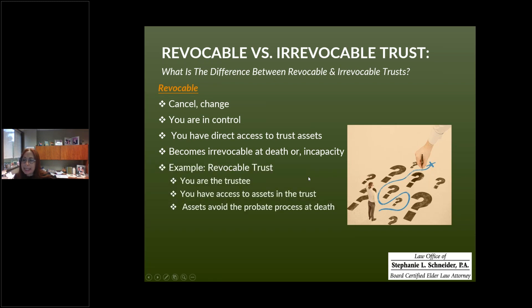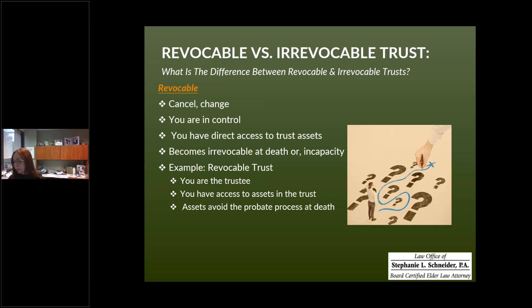The most frequently heard example of a revocable trust is sometimes called a living trust — it got that name because it's a trust meant to work while people are still alive. There are benefits while we're alive and more benefits when we pass on. While we're alive, we can be the trustee, we can oversee how assets are invested, what's going to be paid, and who we might want to make gifts to from the assets in our revocable trust. We have complete access and free will.